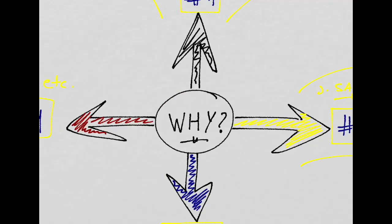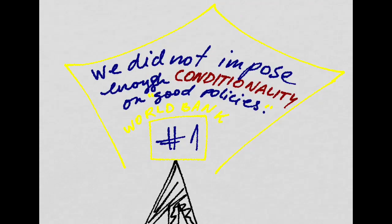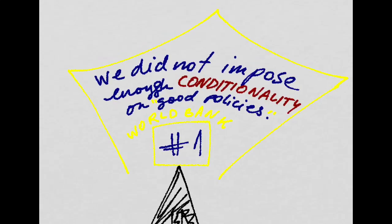Over the last few years, there have been many theories raised on why this happened, and I'm going to cover all of them. The first view, mainly held by the World Bank, says that aid did not work because we didn't impose enough conditionality on good policies being implemented — and that aid would have been effective if we had conditioned on the quality of policies being financed.